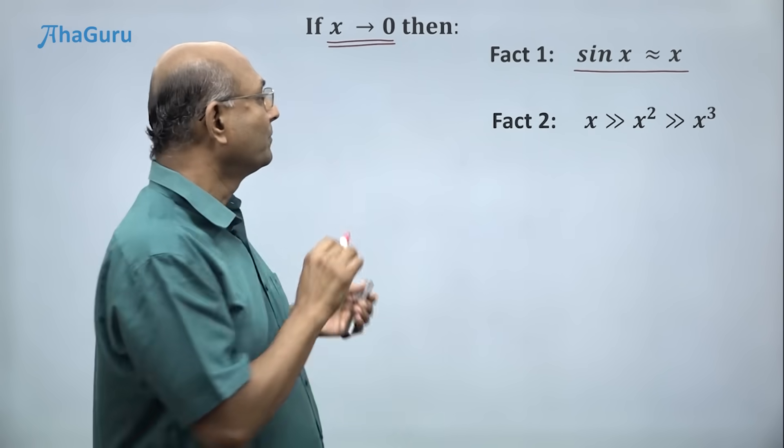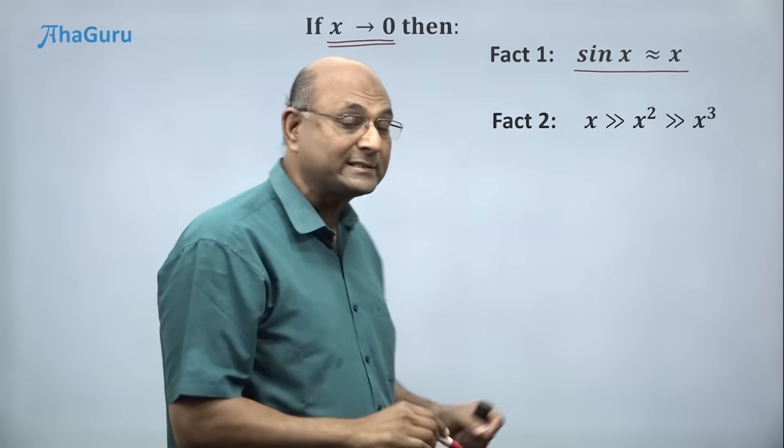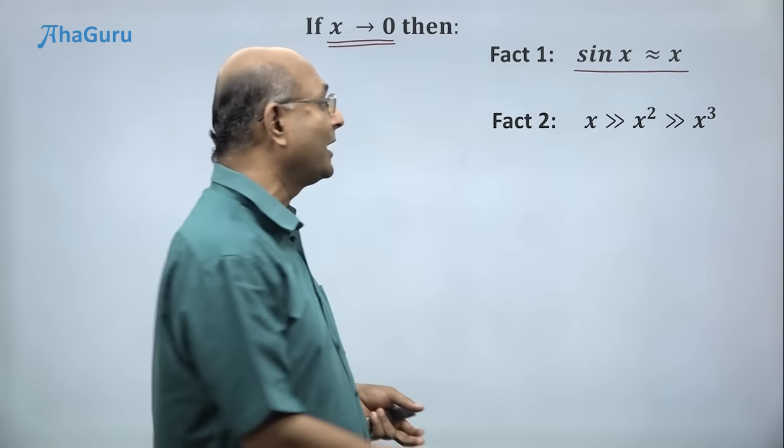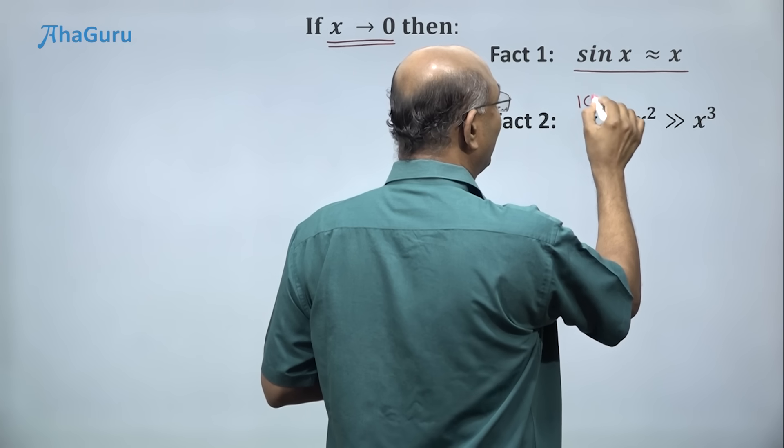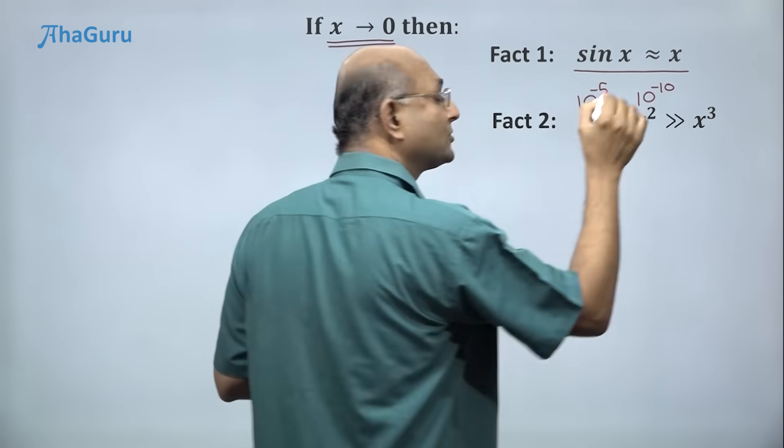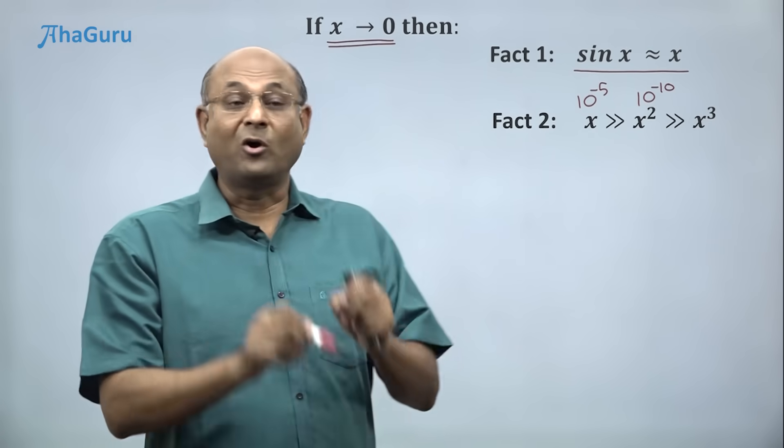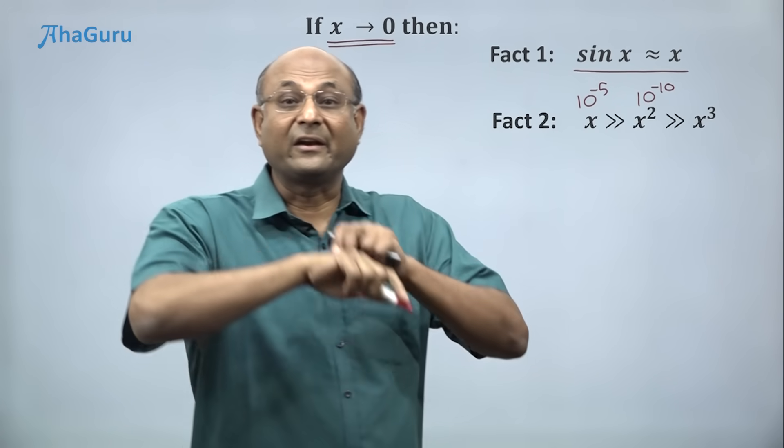Fact number 2: x is small but x square is very small compared to x. x cube is even smaller. If I say x is 10 to the power of minus 5, x square is 10 to the power of minus 10, x cube is 10 to the power of minus 15. So this fellow is small, x square is really small.